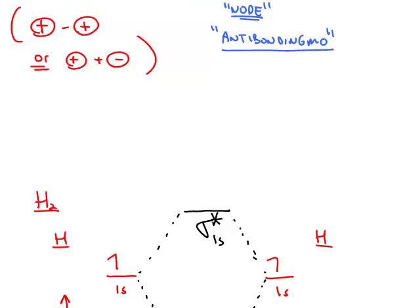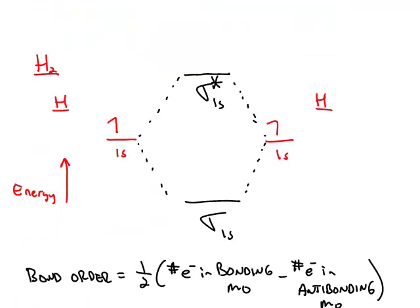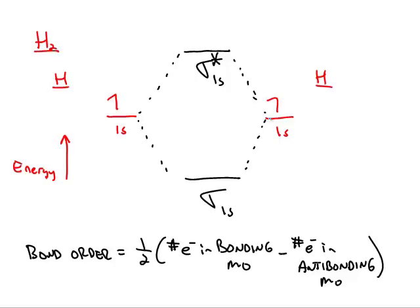If we put this together in one energy diagram, on the outside we see the separated hydrogen atoms, both with one electron in the 1s orbital. In the middle we have the molecular orbitals that are created. One is lower in energy—the bonding molecular orbital—and the one higher in energy is given a little star to show it's the antibonding molecular orbital.